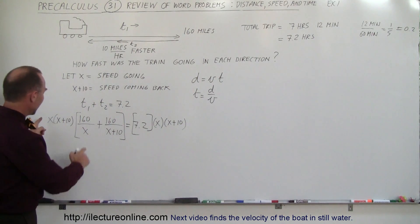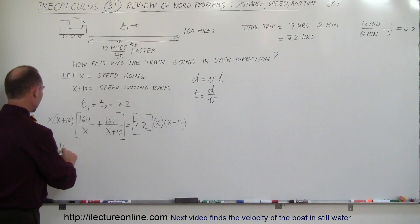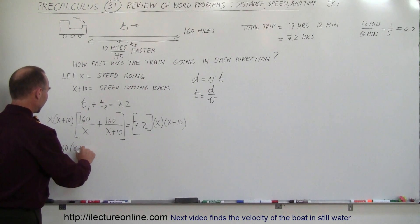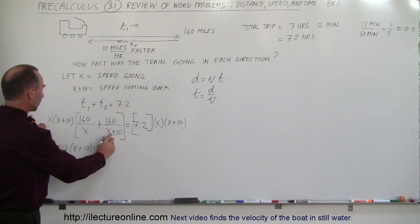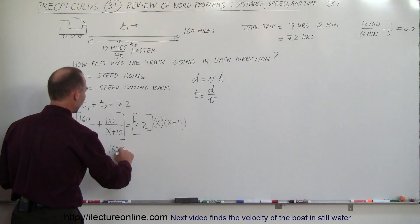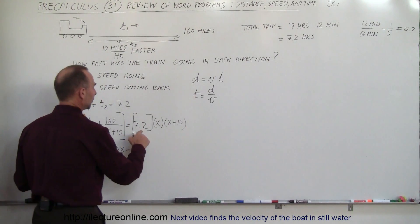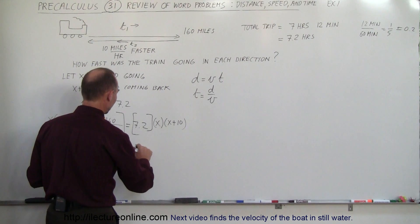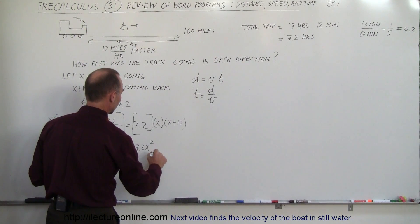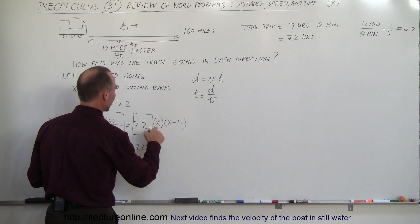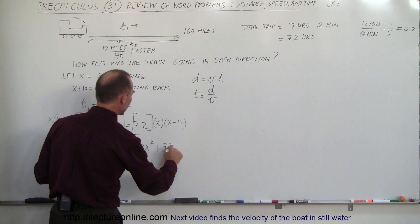If we do that, on the left side, the x will cancel out, and we have 160 times x plus 10, plus the x plus 10's cancel out, that gives us 160 times x equals 7.2 times x times x, which is 7.2x squared, plus 7.2 times x times 10, which is 72x.